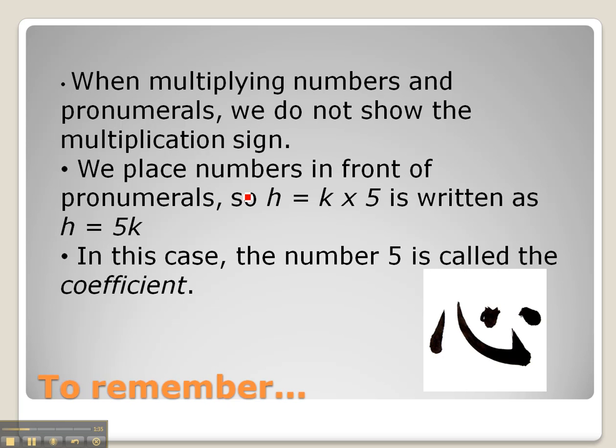So for example, h equals k times 5 is typically written as h equals 5k. In this case, the number 5 is called the coefficient. The coefficient is the number out the front of any pronumeral.